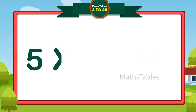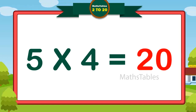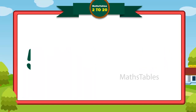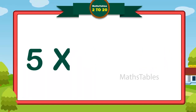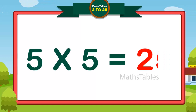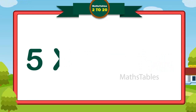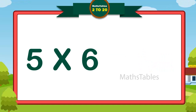Five fours are twenty. Five fours are twenty. Five fives are twenty-five. Five sixes are thirty.